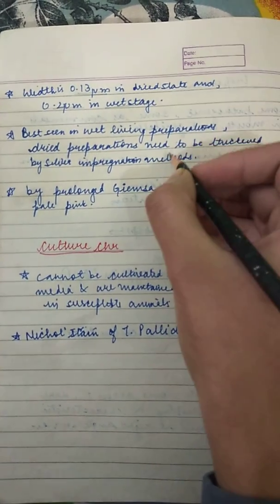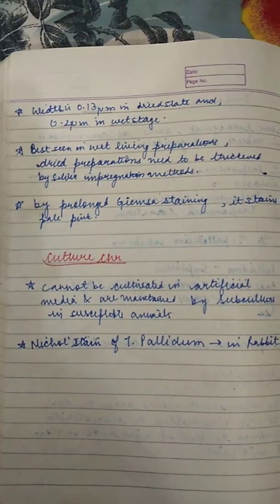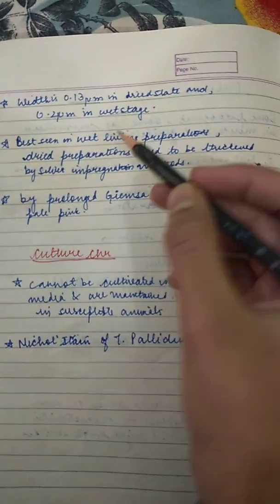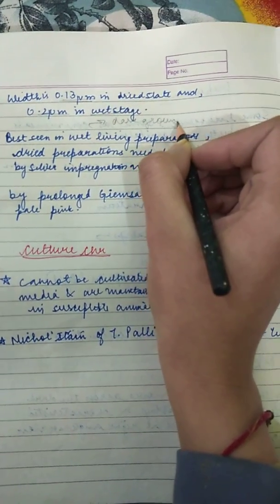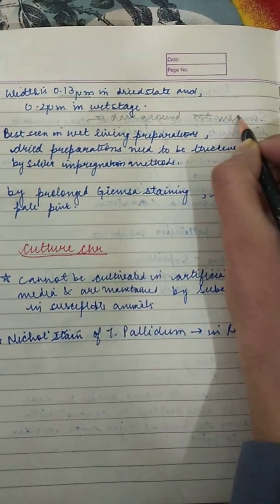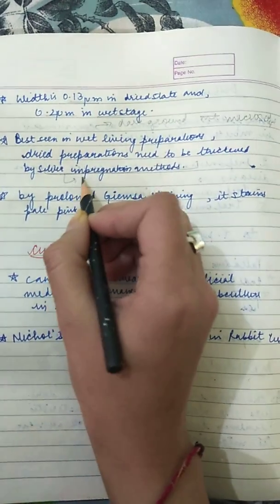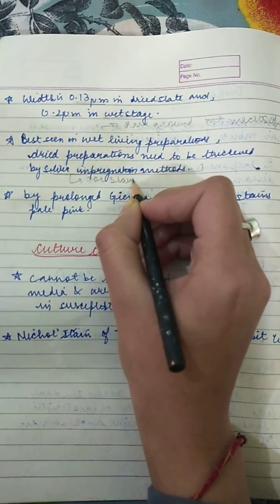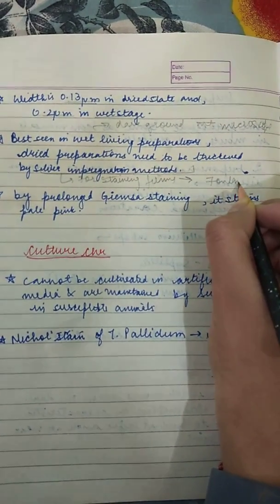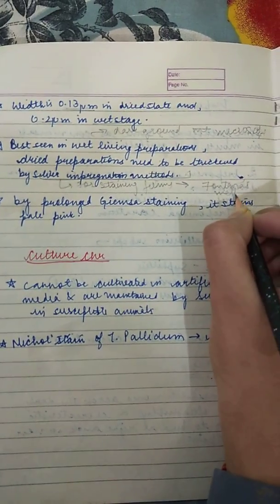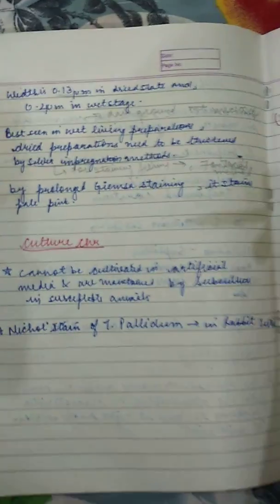Treponema needs to be observed by silver impregnation methods in dry films — this method is known as Fontana's method. We use dark-ground microscopy to observe it in wet living preparations. For staining films, we use Fontana's method, and by prolonged Giemsa staining it stains a pale pink.